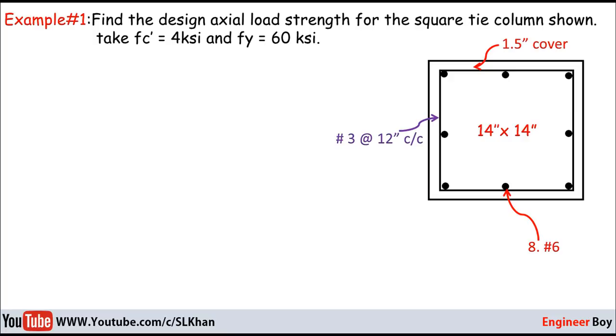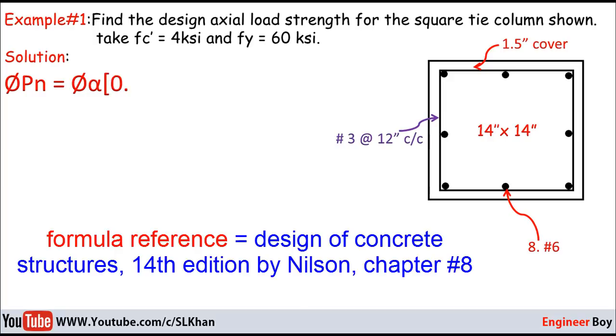The data is enough to determine the design axial load strength of the tie column. Let's go to the solution. Remember the formula: ΦPn = Φα[0.85 fc'(Ag - Ast) + fy Ast].